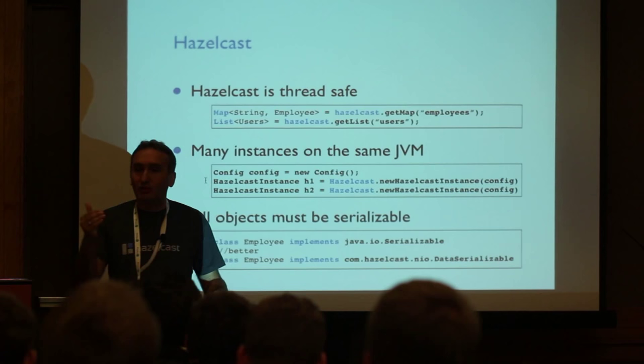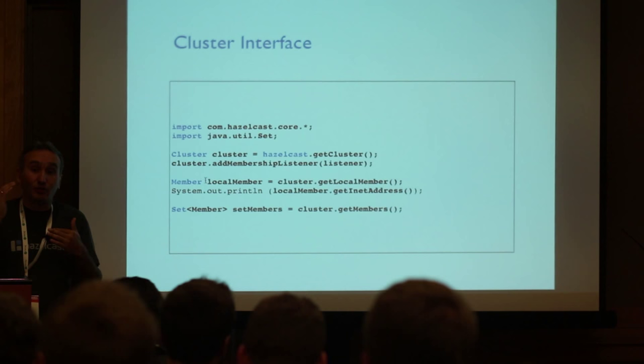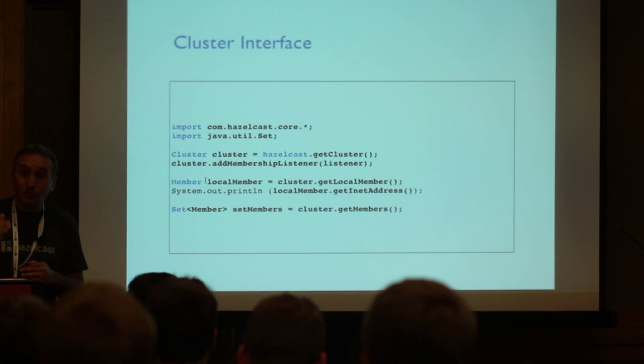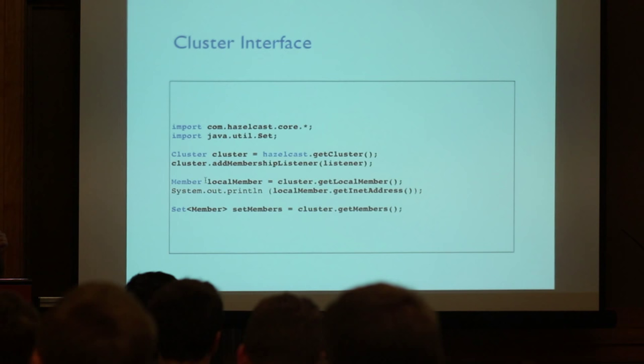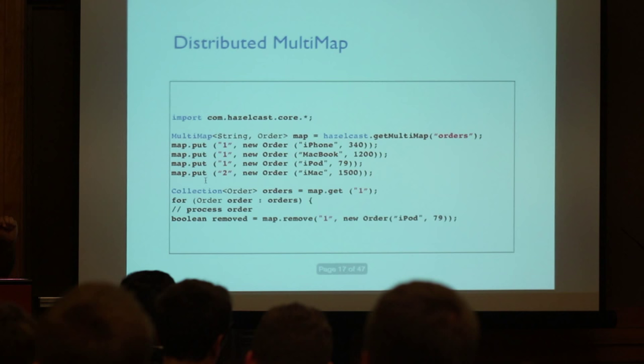Everything has to be serializable — the entry doesn't have to implement Serializable, but there must be a way to serialize it because we'll be writing it over the wire. Serialization will be your biggest bottleneck. Your network throughput is probably fine; the latency you'll see usually comes from serialization. You can listen for membership changes and all that. Distributed map put-if-absent and similar operations are all supported.